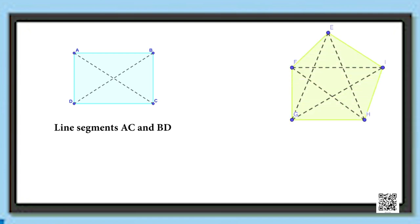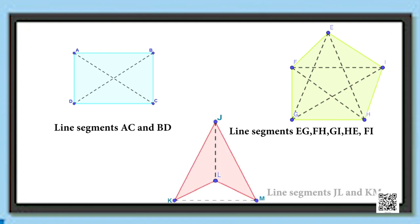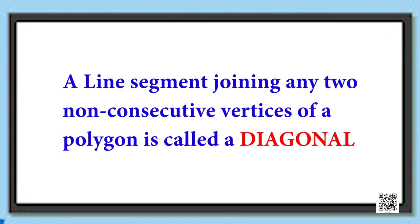In the pentagon EFGHI, the line segments EG, FH, GI, and HE join non-consecutive vertices. Similarly, in the quadrilateral JKLM, line segments JL and KM do the same. All these line segments joining non-consecutive vertices of the polygons are called the diagonals. A line segment joining any two non-consecutive vertices of a polygon is called its diagonal.